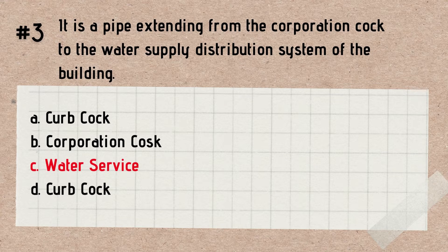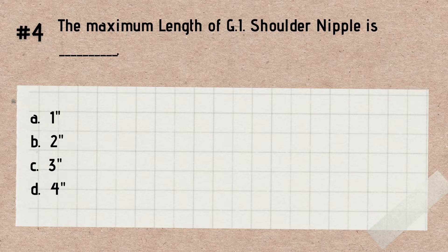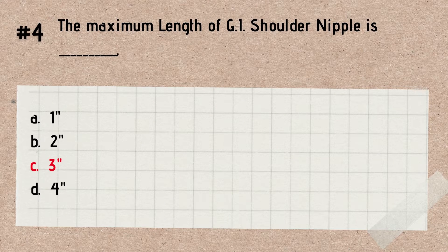Question number 4. What is the maximum length of GI nipple? A. 1 inch. B. 2 inches. C. 3 inches. D. 4 inches. Answer: 3 inches. Remember that the maximum length of a GI shoulder nipple is 3 inches.